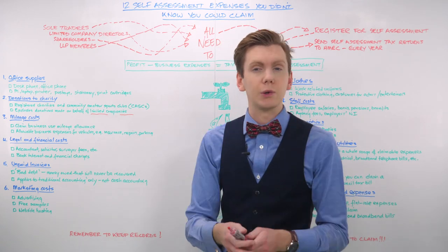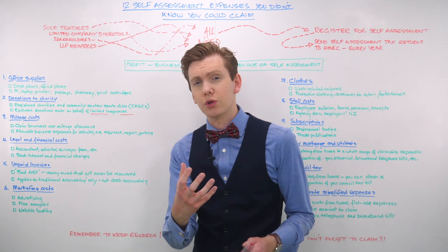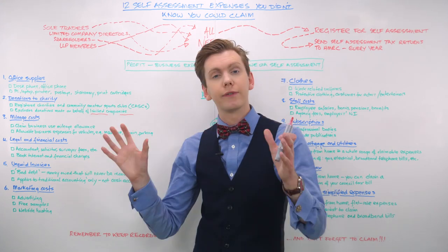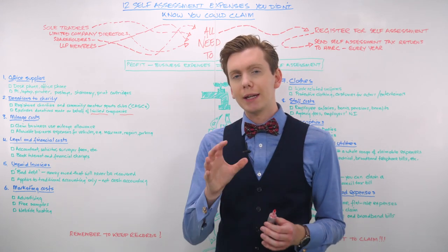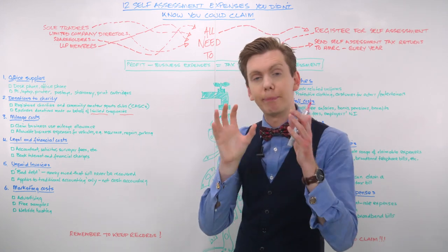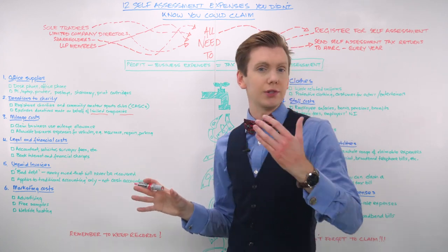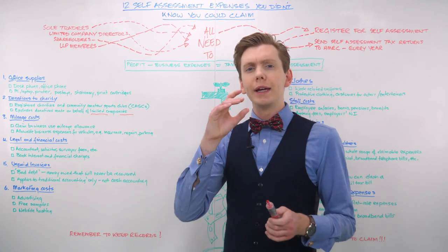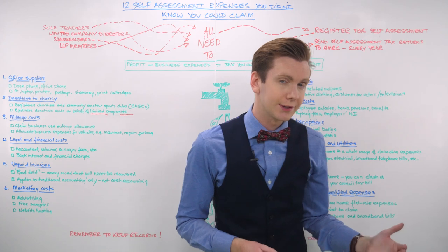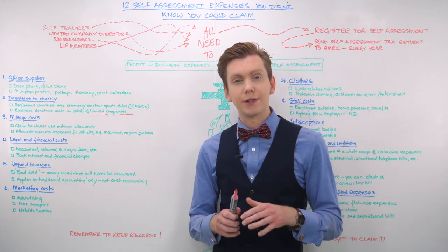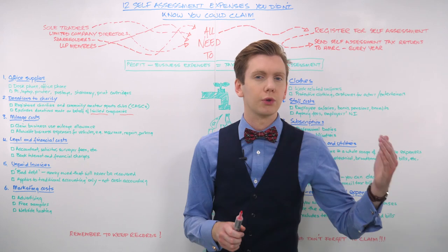Allowable expenses here also include bank overdraft and credit charges, interest on bank and business loans, hire purchase interest, leasing payments and alternative finance payments such as Islamic finance. If you are using cash basis accounting, be aware that there are limits to the amount you can claim in interest and bank charges on your self-assessment form. You are allowed to claim any legal costs associated with buying property or machinery, although if you use traditional accounting, you can claim for them as capital allowances instead. Similar to travel expenses, you are also not permitted to claim any legal or financial costs that you've incurred as a result of you breaking the law.